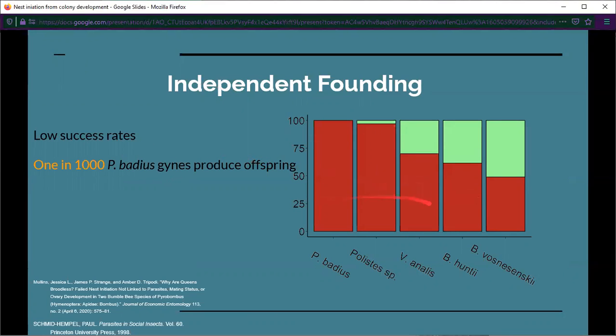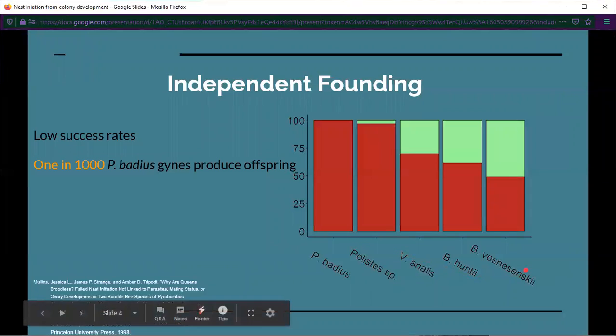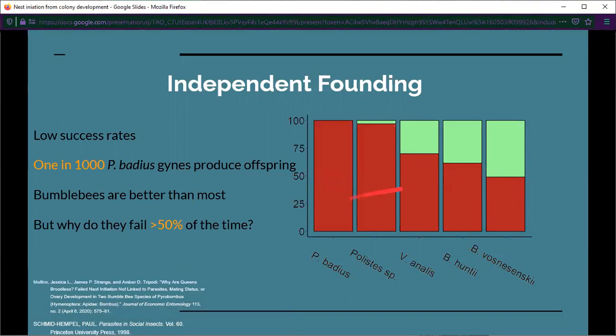Bumblebees do this and independent founding often has very low success rates. This is a graph where the red bars indicate oviposition failure and the green bars represent oviposition success across five different groups of organisms. As you can see, bumblebees are relatively better than the other species of insects, but they still fail 50% of the time. They fail quite often, even in laboratory conditions. So the question is why do they fail this often?